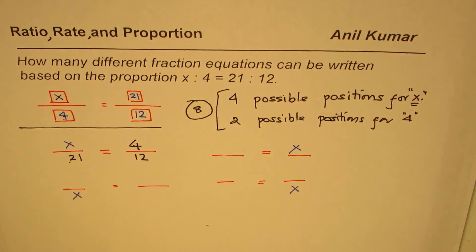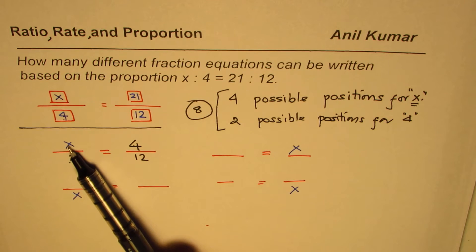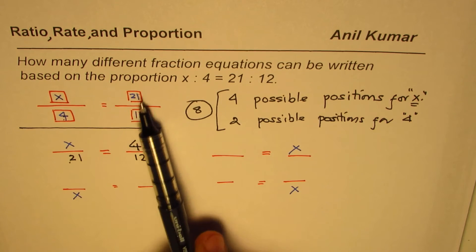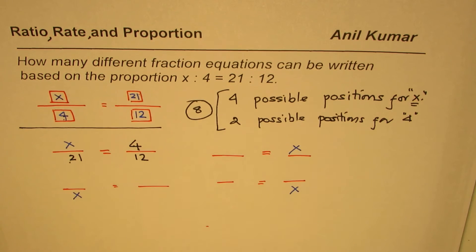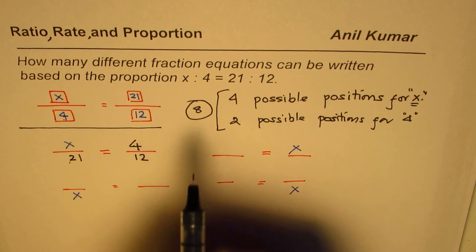So there are 8 ways in which this can be done. Now, if I fix this and that, then the other two numbers are already fixed. We cannot interchange them. If we interchange them, then it becomes a wrong equation. You get an idea. So we have to put those numbers at a fixed place.